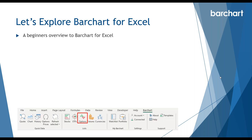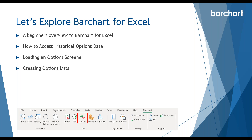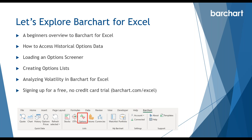So the plan for today: we'll go through a beginner's overview of Barchart for Excel and give you a quick idea of how to use some of the basic functions. We'll take a look at how to access historical options data, loading an options screener in Excel, creating option lists, and one of my favorite things — analysing volatility in Barchart for Excel. Towards the end, some of my favourite features that I think you'll really love. Then we'll talk about how you can sign up for a free no credit card trial.